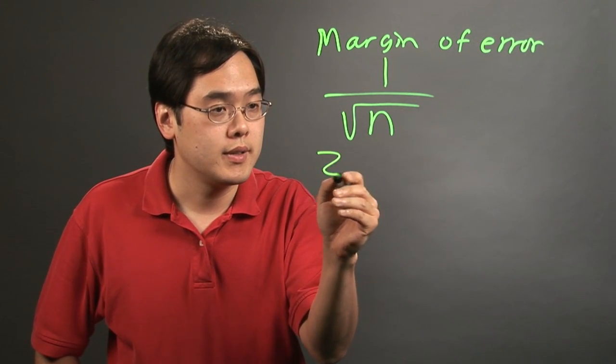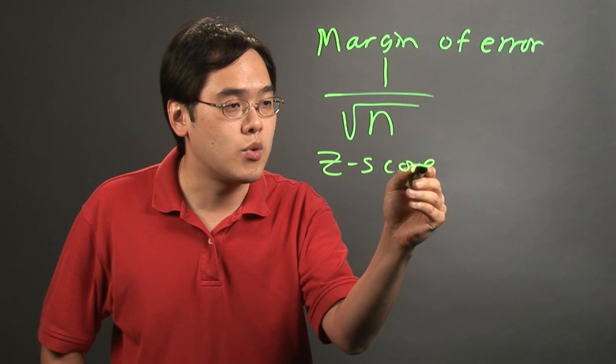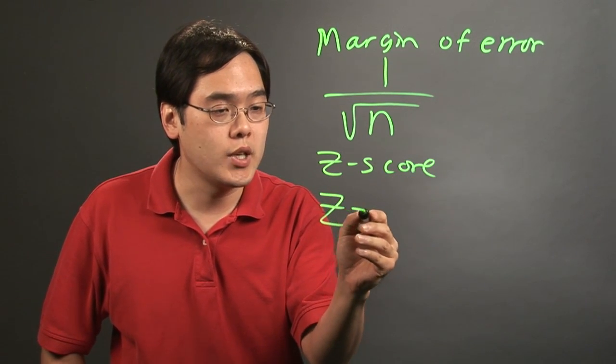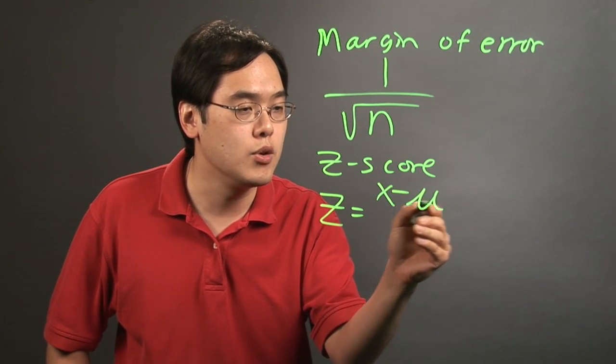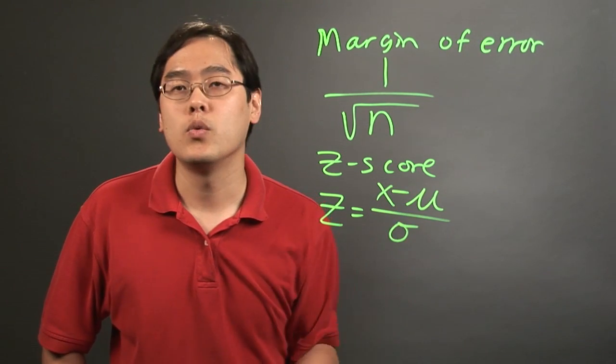Another formula is the z-score formula, where it's written as z equals x, which is the data point, minus the mean mu, over sigma, which is standard deviation.